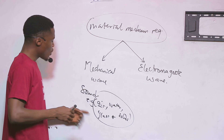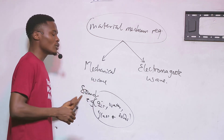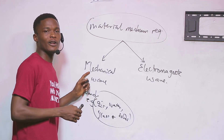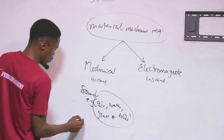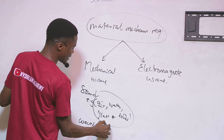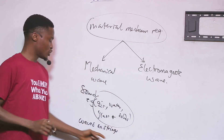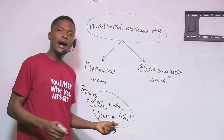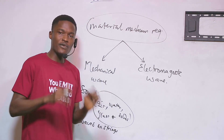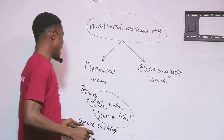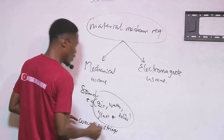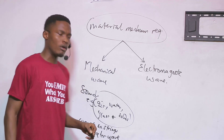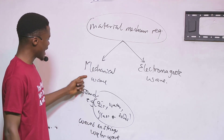Once we know what mechanical waves are and that sound wave is a good example, we can also look at other examples of mechanical wave. Another example is waves on strings — whenever you pluck a string or shake a rope, you generate waves on that rope, and those are examples of mechanical wave. Even the water wave we mentioned earlier is an example of mechanical wave.